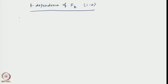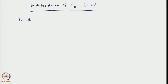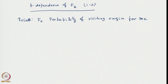Let us recall the definition: f_k stands for the probability of visiting the origin, which is the starting point, visiting the origin for the first time in k steps. Let us stick to the 1D case, so it will be basically a random walk along the real line.